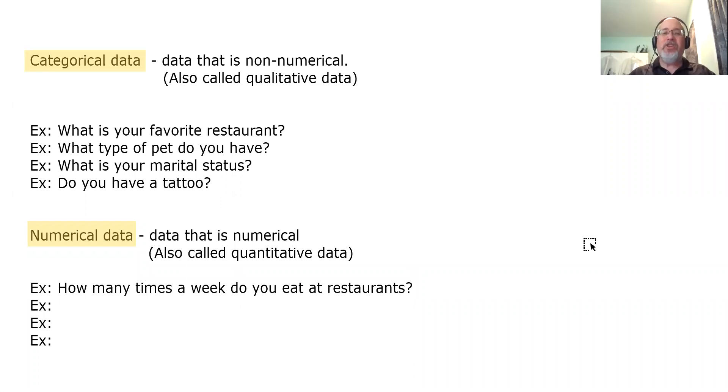Examples of numerical data: How many times a week do you eat at restaurants? That question would have a number as an answer. Now, compare that to the first question up here: What is your favorite restaurant? Both involve restaurants, but one question is categorical in nature because the answer is non-numerical, and the other question is numerical in nature because its answer is numerical.